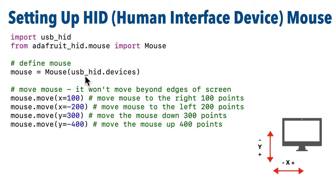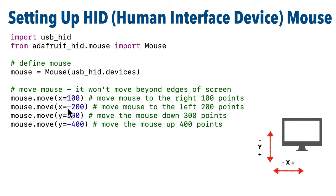Here is how you can control mouse movements. The X coordinate is the horizontal on your screen — left and right. Positive moves right, negative moves left. The Y coordinate is the vertical coordinate on your screen — negative moves up and positive moves down. So this is how we nudge the current mouse location in different directions. For example, mouse.move(x=100) moves the mouse right 100 units, x=-200 moves it left 200 units, y=300 moves it down 300 units, and y=-400 jumps the mouse up 400 units.